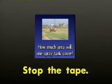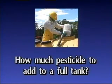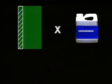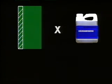Stop the tape and do problems 4 and 5 in the section of your workbook entitled "How much area will one spray tank cover?" There are all sorts of safety and other considerations when it comes to mixing and loading, but right now we are going to show you how to calculate how much pesticide to add to a full tank. To figure out how much, multiply the area covered by one tank by the pesticide rate for the pesticide you are using — that will tell you the amount of pesticide needed for one full tank.